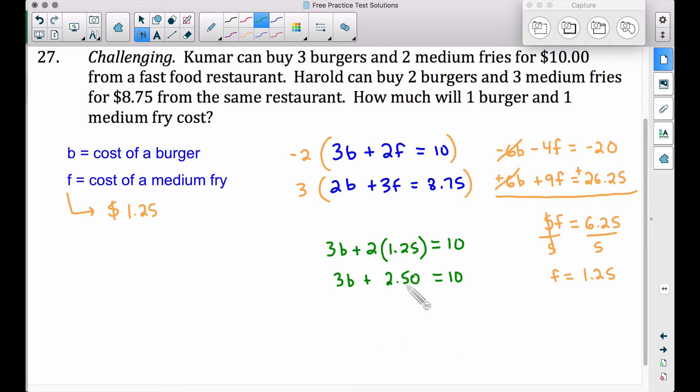So those two medium fries cost $2.50. We can subtract that $2.50 from both sides. We are now solving for B, the price of a hamburger. 3B is equal to $10 minus $2.50 is $7.50. Divide that by 3 to get B by itself, we have B is equal to 2.50. So the cost of a hamburger is $2.50.